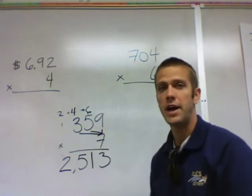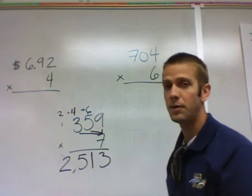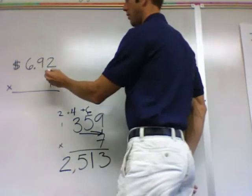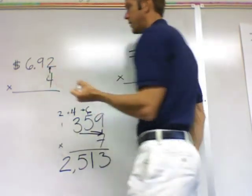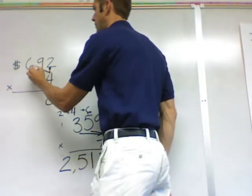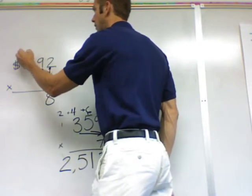Let's try one with a dollar sign here. It's very similar, it just has a decimal in it. Four times this first column, the one's column, is 8. Four times nine is 36.